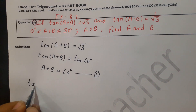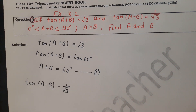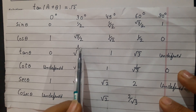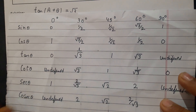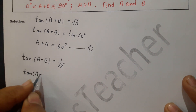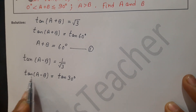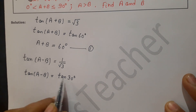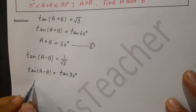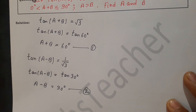For the second equation, we have tan(A-B) = 1/√3. We check the table for the angle where tan θ = 1/√3. From the table, tan 30° = 1/√3. Since the left and right sides are equal, we get A-B = 30°. This is Equation 2.